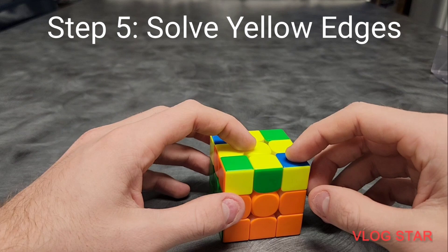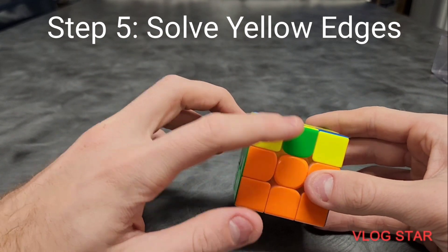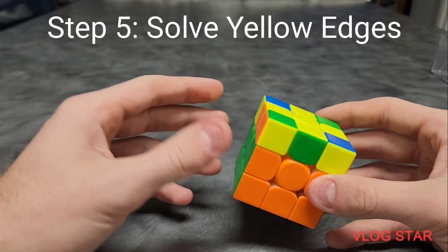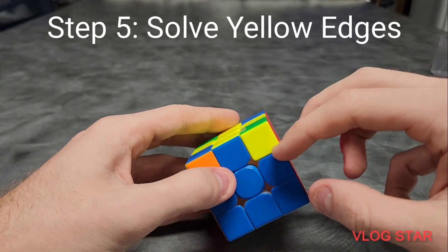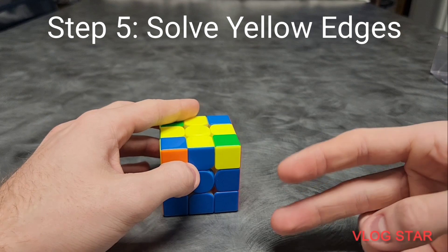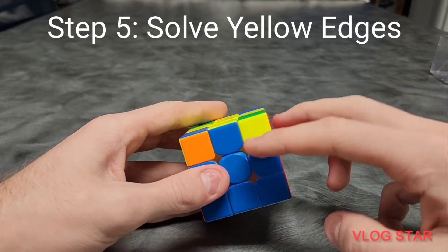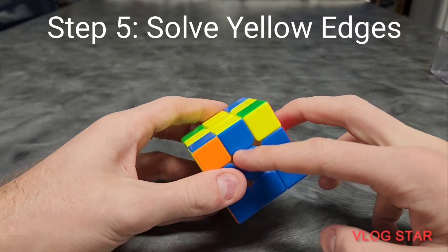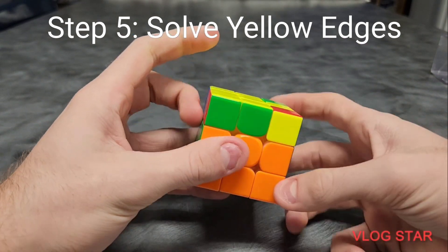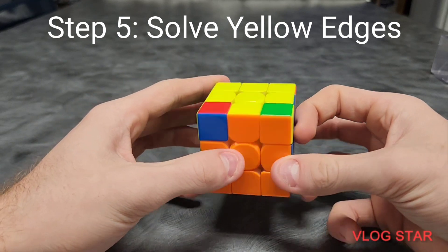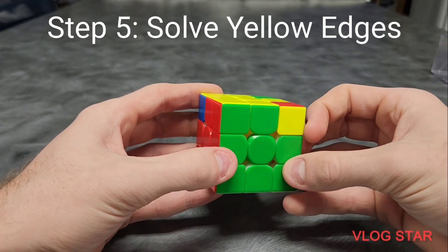Almost there. Just a couple more steps to go. Now we've got to get the edges matching with their right centers. So, we want to have the edges that are solved be in the back. Now, you're either going to have two or you're going to have all of them. If you have all, skip this step. But, we want to have two. Match them to the back and to the right and then do algorithm 5. And then you should have all of them solved.